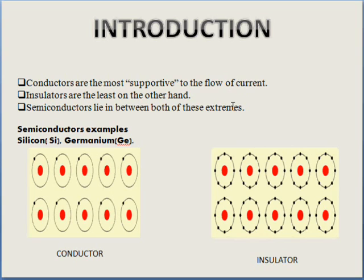Semiconductors, as their name suggests, lie in between both of these extremes. Two examples to quote are silicon and germanium, the most commonly used semiconductors.